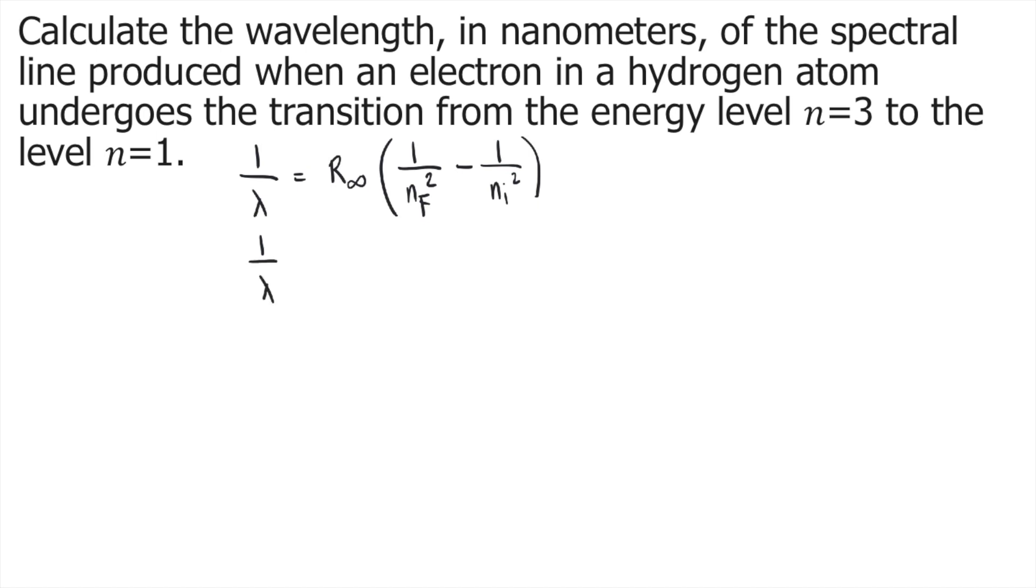1/wavelength equals R∞, the Rydberg constant, which is approximately 1.0973 × 10⁷ per meter.